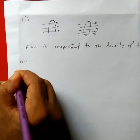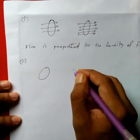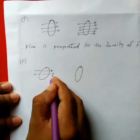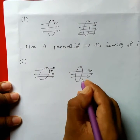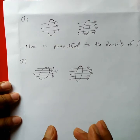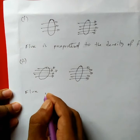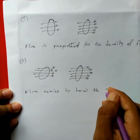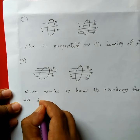Number 2: I will put the surface at a different angle. So the surface area is the same, but at a different angle to the flow of the electric field. The direction of the flow is the same; flux varies by how the boundary faces the direction of flow.